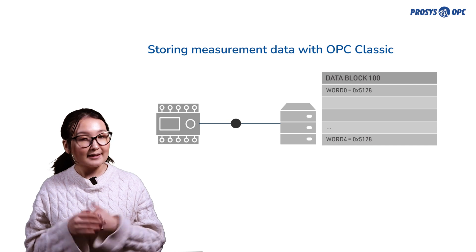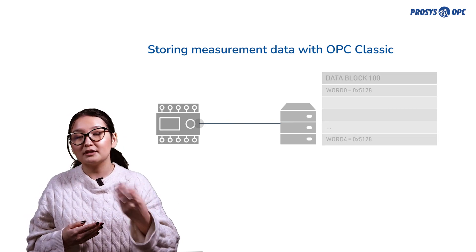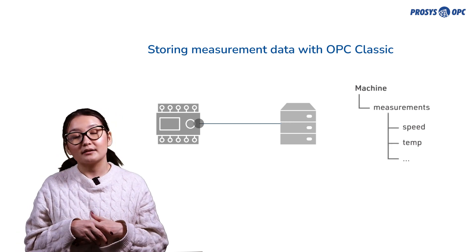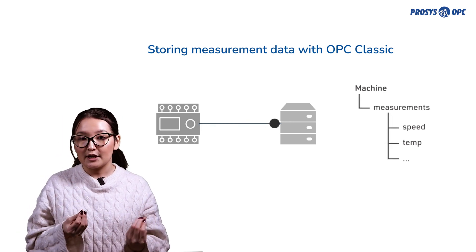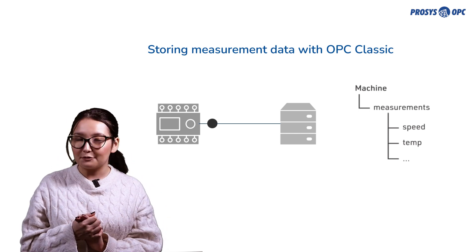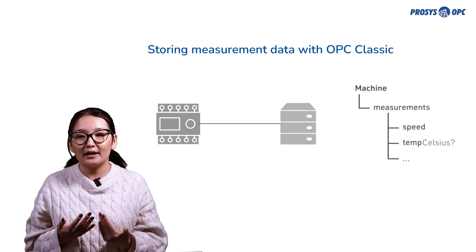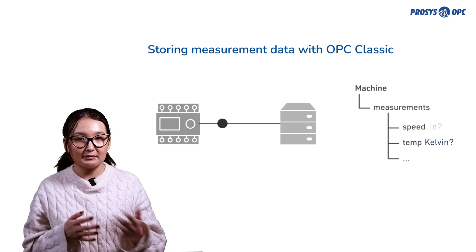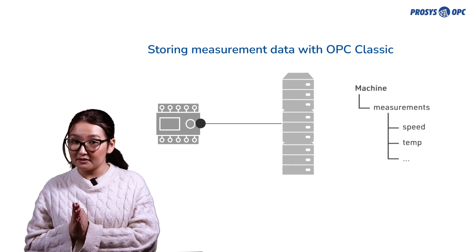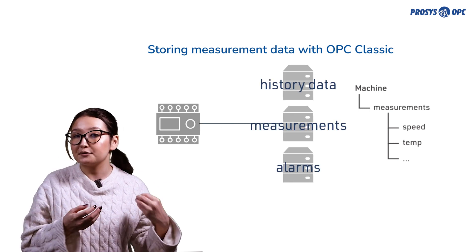In OPC Classic, a significant step forward was the introduction of human-readable names for measurements. The next step was the hierarchical layout of the address space, which made it way easier to browse through the data of an OPC Server. However, OPC Classic could not really show any other relationships between the measurements and the parameters. Also, alarms and history data were separated from the current measurements on their own servers.